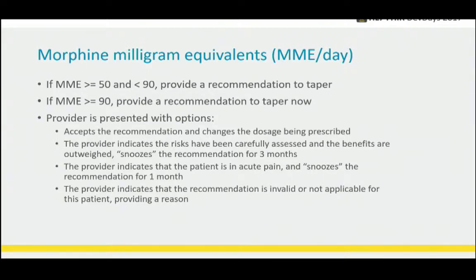One option is to accept the recommendation and change the dose being prescribed. Two is to indicate they've considered the risks and the benefits have outweighed the risk. Another option is that the provider indicates the patient is in acute pain and snoozes that recommendation for a month. And then another option is the provider says this recommendation is invalid and not applicable and provides a reason — ideally that would feed back to the recommendation development.